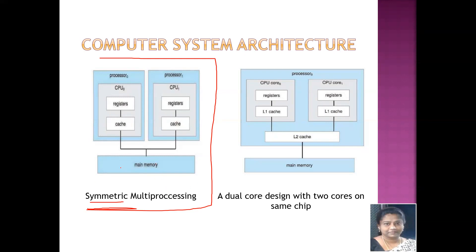The diagram shown here is the architecture of a dual core design with two cores on the same chip. Each core has its own register set as well as its own local cache. L1 is the local cache, and every core processor will have its own register and its own local cache referred to as level 1 (L1) and level 2 (L2).